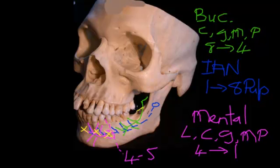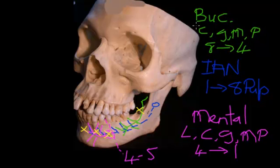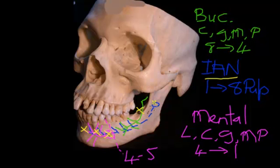In the posterior region, we use more technically demanding techniques. First, we can block the buccal nerve by putting a little solution behind the last molar tooth — that blocks sensations from the cheek, gingiva, mucosa, and periodontal ligament in that area. However, that doesn't block the pulps. To block the pulps, we need the inferior alveolar nerve block — colloquially called a mandibular block — given near the mandibular foramen on the medial surface of the ramus.